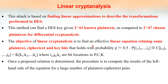Linear cryptanalysis. As the name shows, it will try to find a linear equation relating the plaintext, ciphertext and the key bits. For example: P[I1, I2, ... Ia] XOR C[J1, J2, ... Jb] equals K[K1, K2, ... Kc]. That is, a linear relationship between the plaintext, ciphertext bits and the key bits. This attack is based on finding linear approximations to describe the transformations performed in DES. This method can find a DES key given 2 raised to 43 known plaintexts, as compared to 2 raised to 47 chosen plaintexts for differential cryptanalysis.